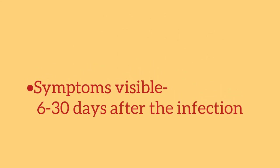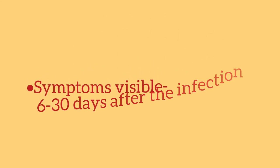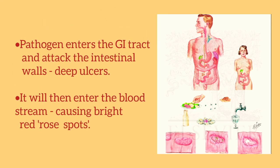Symptoms of typhoid are usually visible within 6 to 30 days of infection. The pathogen enters the stomach through consumption of contaminated food or water, passes to the intestine, where it multiplies and causes deep ulcers producing bloody stools with diarrhea or constipation.